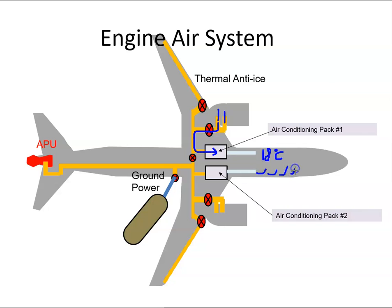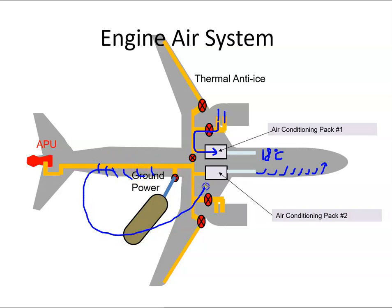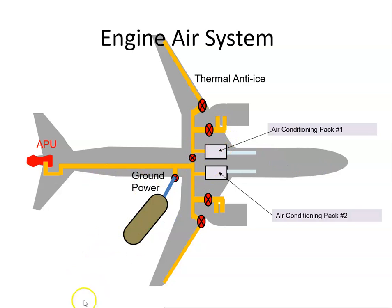That air then flows out into the cabin through a series of ducts, and some of it may actually recirculate back down. Some of it gets recycled and goes back into a mixer unit in the air conditioning system. That's one of the air systems supplied by the engine.